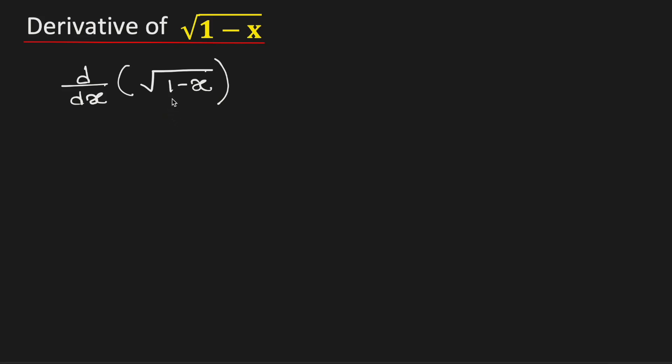In this video, let us find the derivative of square root of 1 minus x. To do this, let us assume 1 minus x is equal to t.